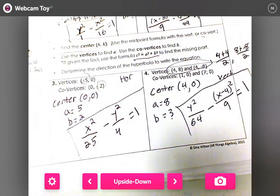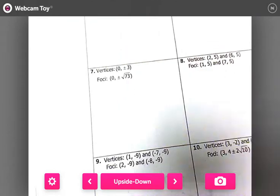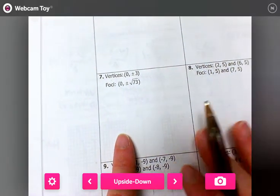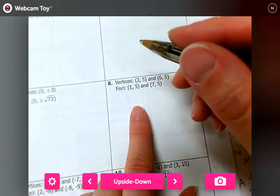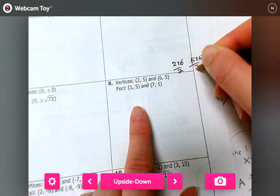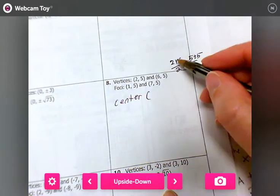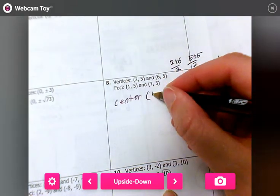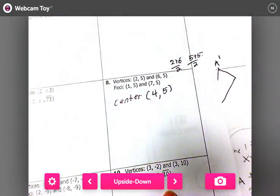We're going to skip 5 and 6, and we're going to go to 7, because I want to do at least one with a focus point. Let's look at 8. So first thing we're going to do is we're going to find out what the center is. So that's (2+6)/2, (5+5)/2. So we end up with a center, 2 plus 6 is 8, 8 divided by 2 is 4. 5 plus 5 is 10, 10 divided by 2 is 5. Center is done.